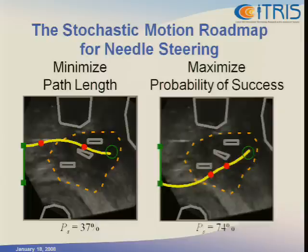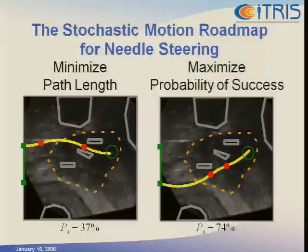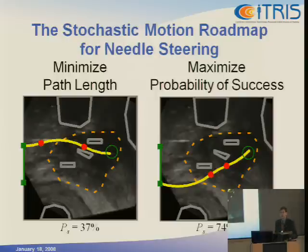Using this approach, we can compute plans that may have somewhat longer paths, but the key advantage is that they avoid obstacles in such a way that even when there is uncertainty in the needle's motion, the probability of successfully reaching the target without colliding with an obstacle is greater. This is a sort of computation where we can do a lot of pre-computation and then give the physician information that would be much harder to intuitively figure out.